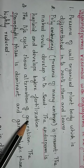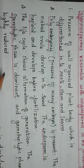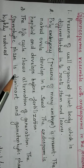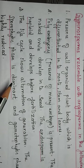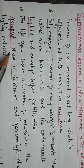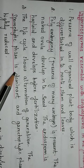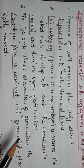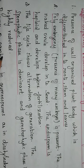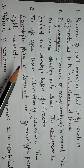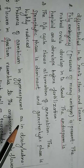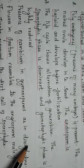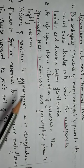The life cycle shows alternation of generations. The sporophyte is dominant in both gymnosperms and angiosperms, and the gametophytic phase is reduced. The presence of cambium in gymnosperms is similar to that in dicotyledons.